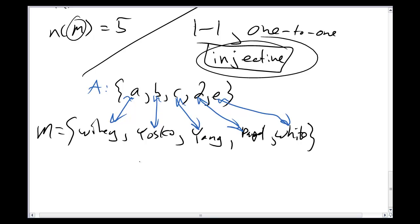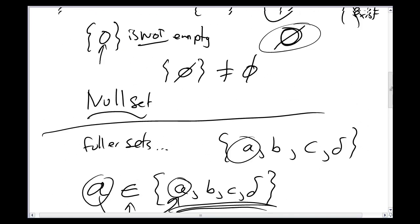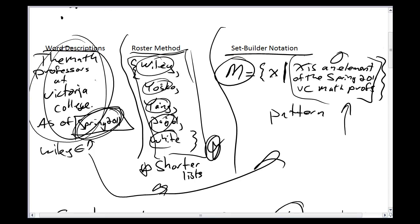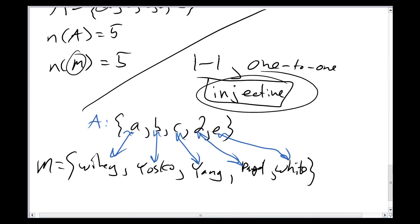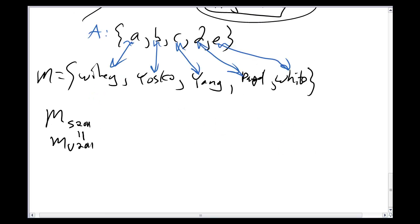Two sets are equal if they have exactly the same elements. Equal doesn't mean equivalent — equal means both sets are exactly the same right down to the last thing. Usually you talk about equal when describing two things with different words. For example, 'the math professors at Victoria College as of spring 2011' and 'the math professors at Victoria College as of summer 2011' look like different sets, yet we actually are the same group in both spring and summer 2011. So those two sets are equal — same number of people, and in fact the exact same people.